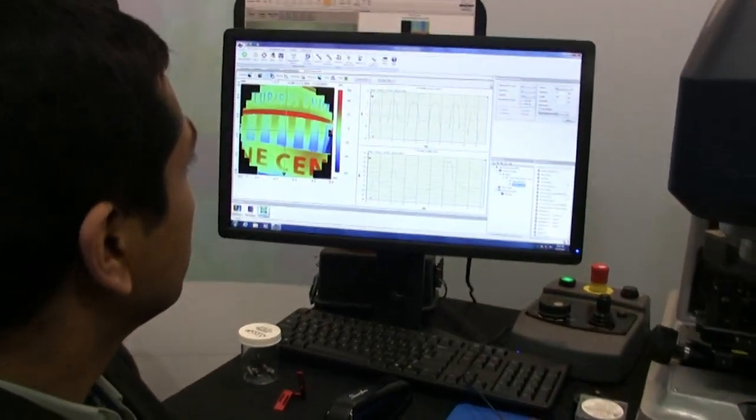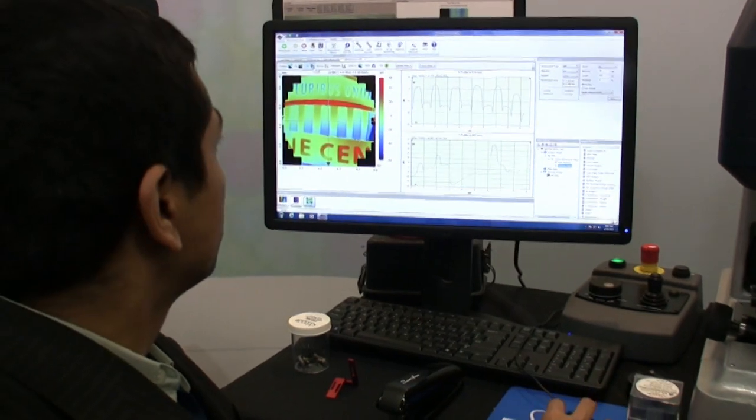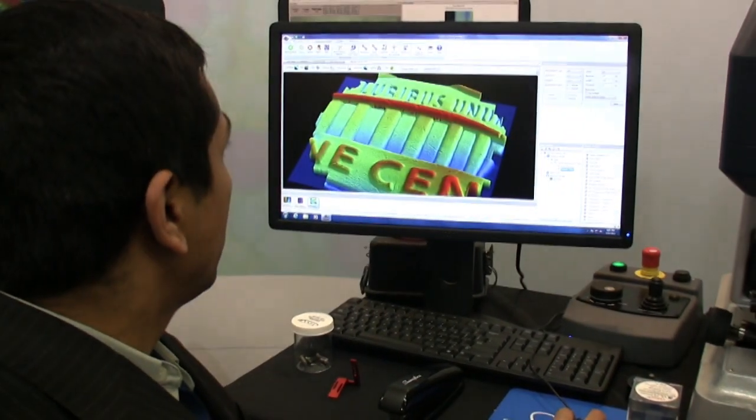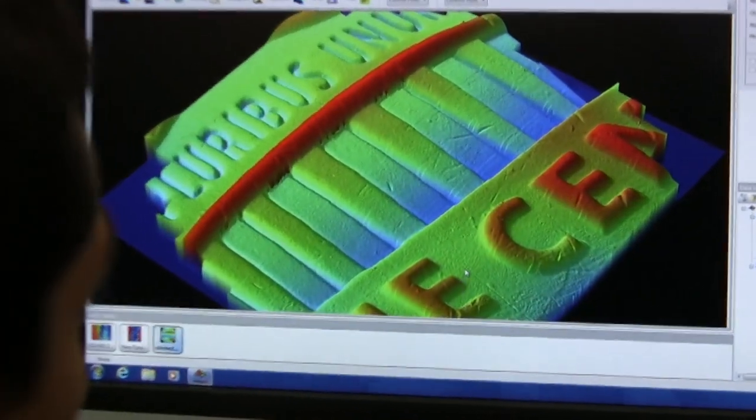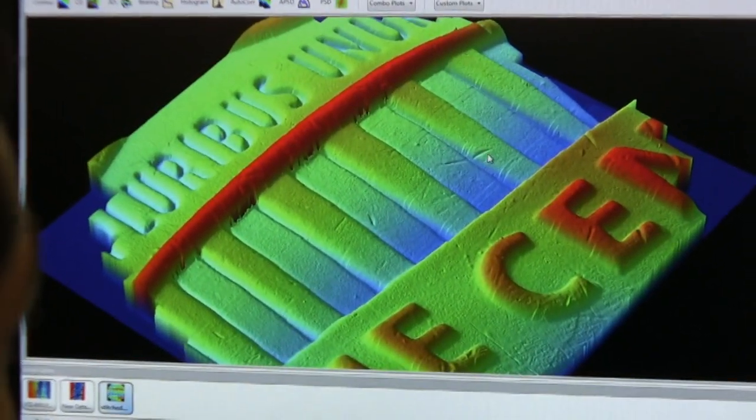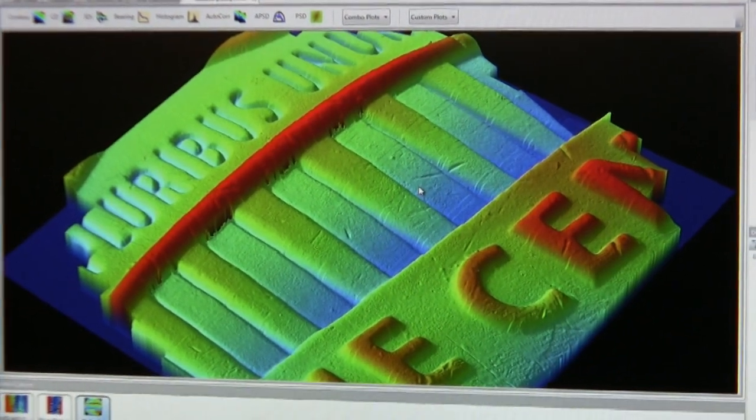Here's a small section of the penny. This was a stitched measurement - we took several measurements on the surface and you can look at how the penny looks in three dimensions. You can analyze scratches on the penny, defects in the copper surface - very high resolution measurement.